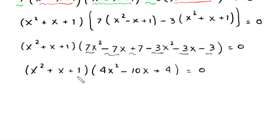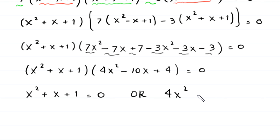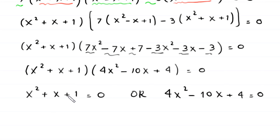From here, either (x² + x + 1) = 0 or (4x² − 10x + 4) = 0. We now have two quadratic equations to solve. The first, x² + x + 1 = 0, is not factorable, so we solve it using the quadratic formula.